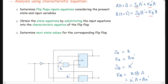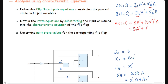Substituting into the first characteristic equation, A(t+1) = J_A · A' + K_A' · A = B · A' + (B · x')' · A, which simplifies to: A(t+1) = B · A' + A · B' · x.